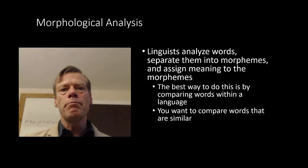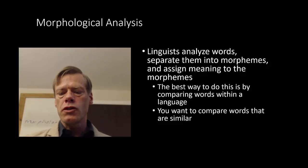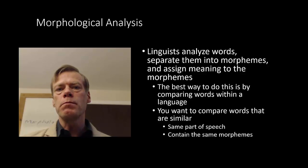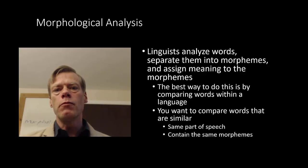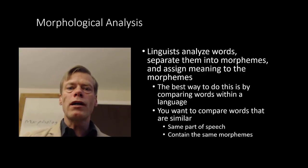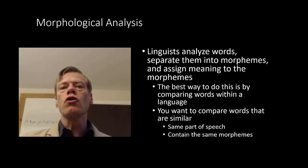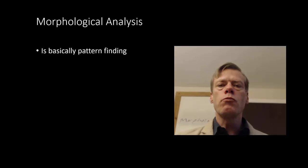We want to compare words that are similar — compare apples to apples, oranges to oranges. So for example we want to compare the same part of speech, or words that have the same morpheme in them, or words that have some other feature similarity, like plurals to plurals. What we're doing is looking for patterns. That's what morphological analysis is — it's pattern finding.